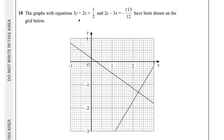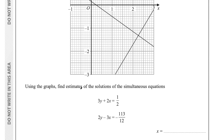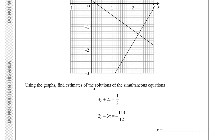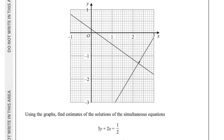Question 10 says the graphs with equations 3y plus 2x equals one half, and 2y minus 3x equals negative 1 and 13/12, have been drawn on the grid. Using the graphs, find estimates of the solutions of these simultaneous equations. Rather than solving algebraically, we find the intersection point of the two lines — the coordinates of that point are the solution. Looking at where the lines intersect: